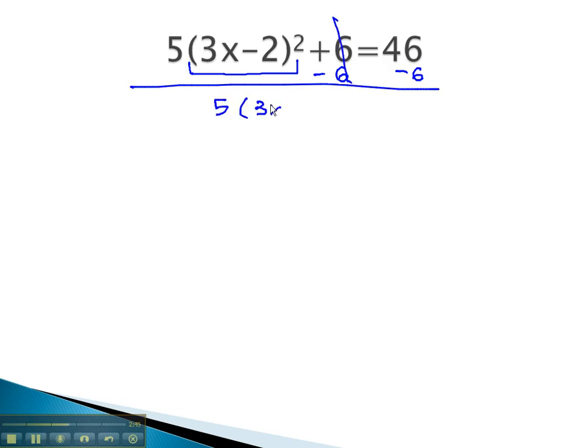5(3x-2)² = 40. Dividing both sides by 5 to get the exponent part alone, leaves us with (3x-2)² = 8.